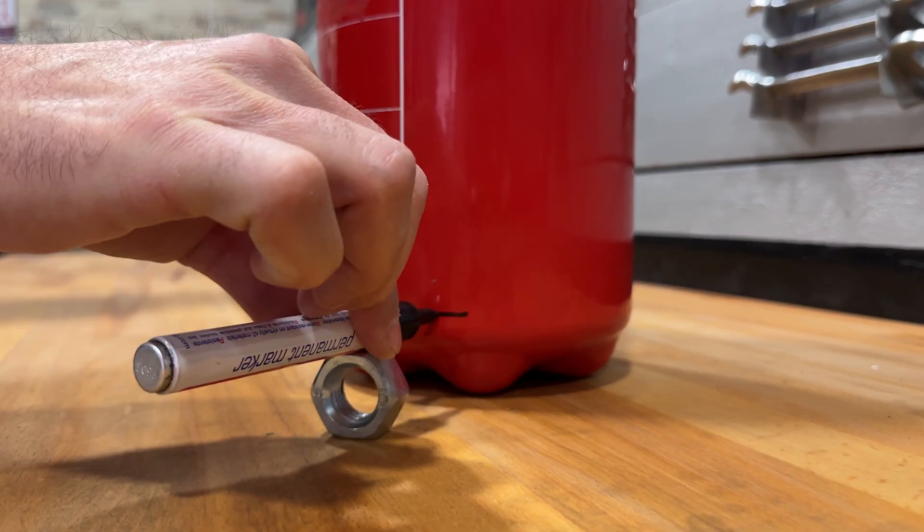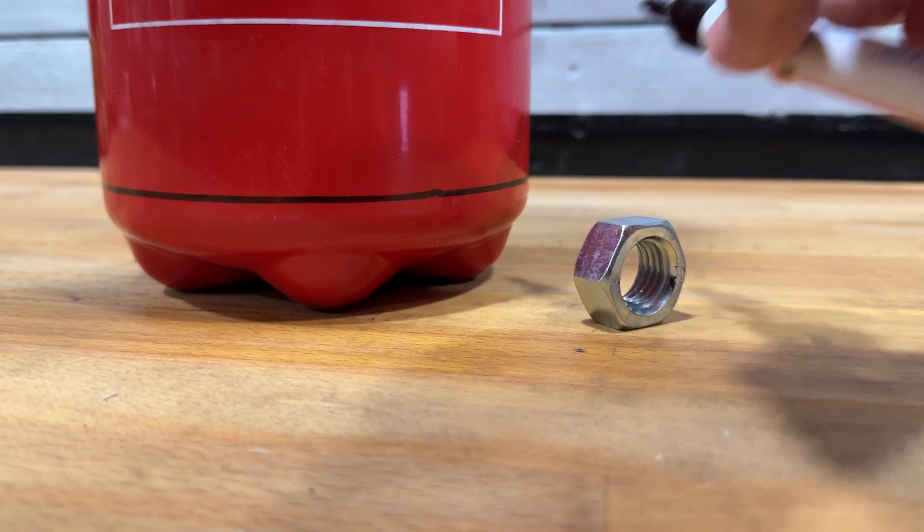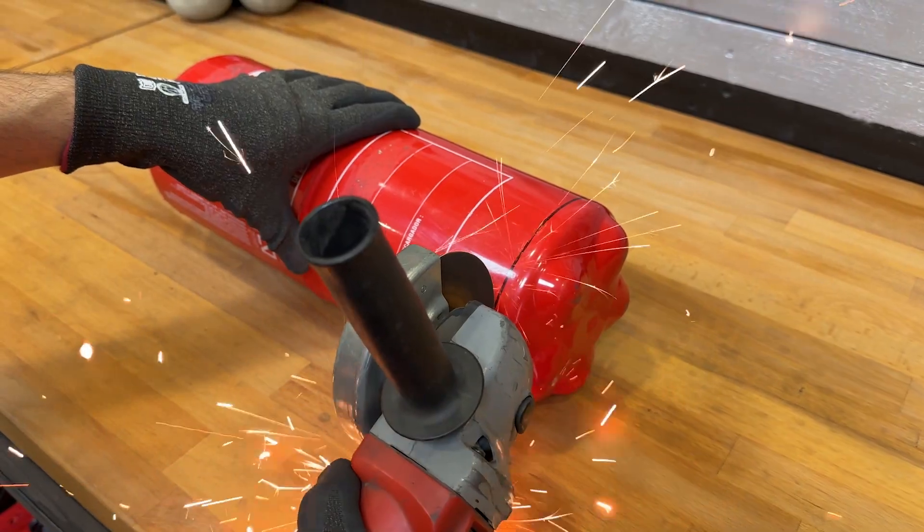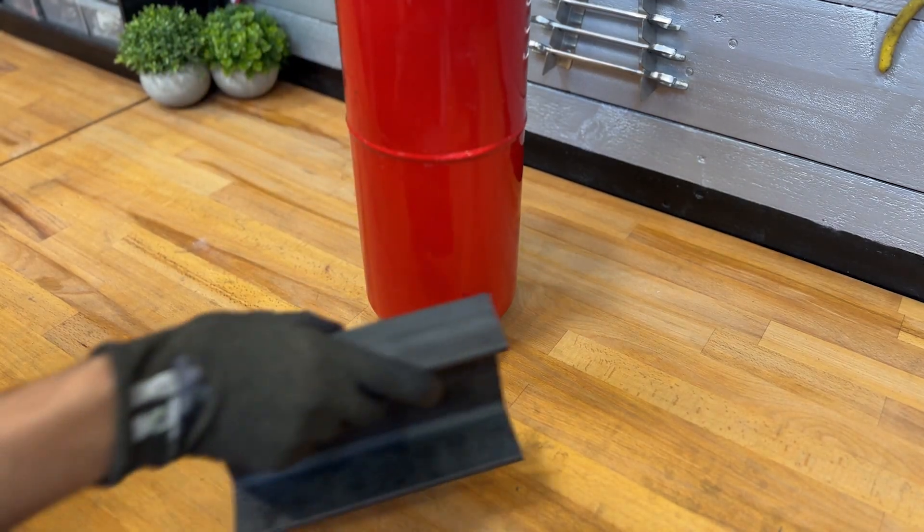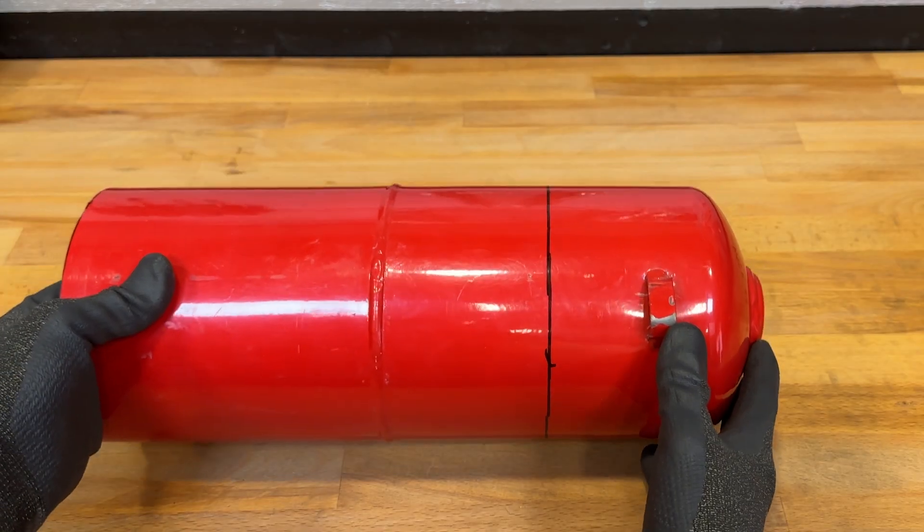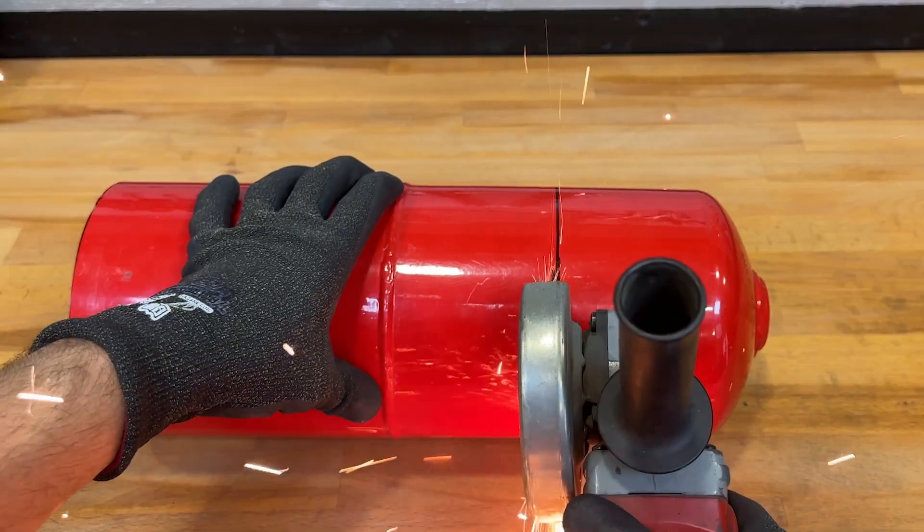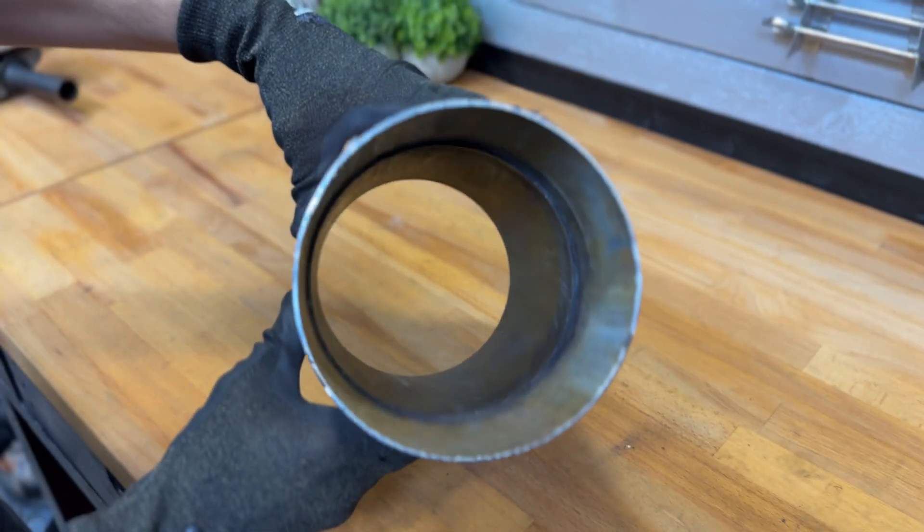Now we use a large nut and a permanent marker to trace the cutting area. We cut with a circular saw. And now we use this piece of iron to trace the other cutting line, and we cut this other section. This cylinder will be the body of the stove.